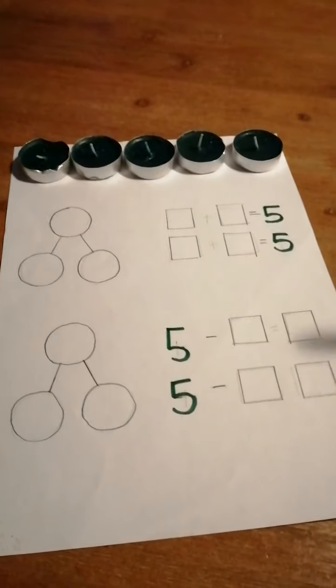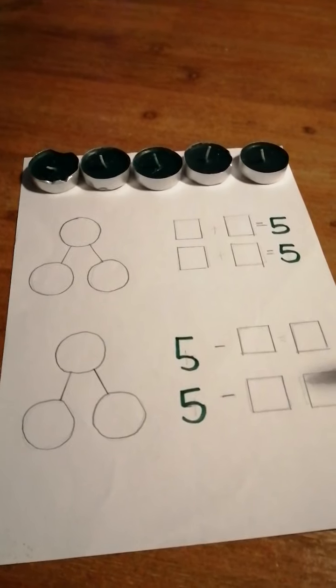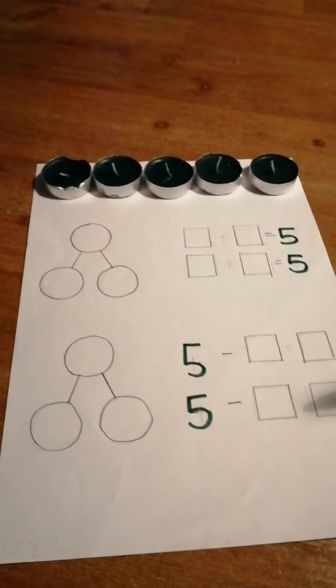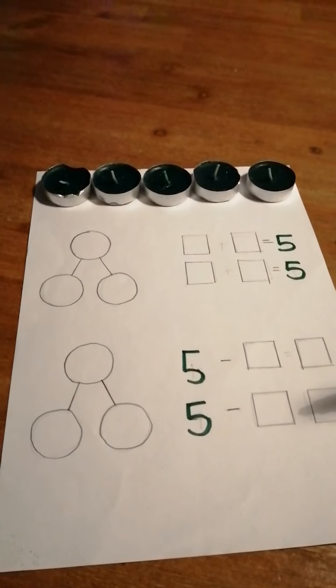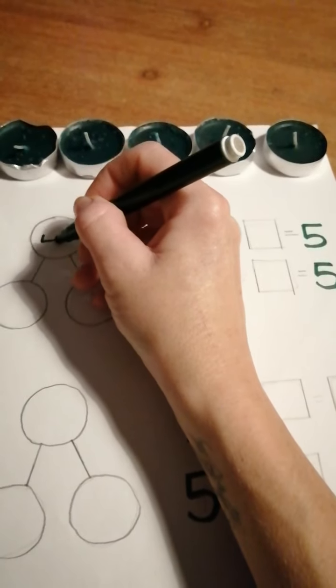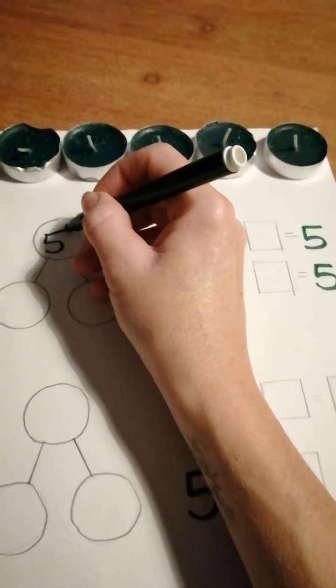Now all together I've got one, two, three, four, five candles. So that's my whole number. Where does that go on my part, part, whole model? That's right at the top.